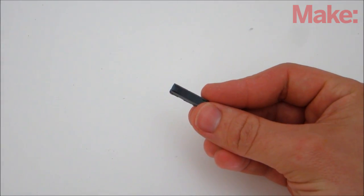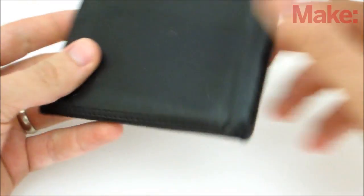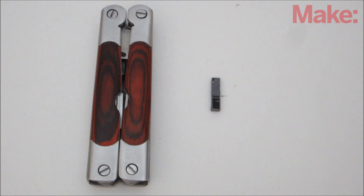Now you need to decide on a new housing for your RFID chip. You can use just about anything, but I recommend using a housing with hard rigid sides, such as the inside of a multi-tool.